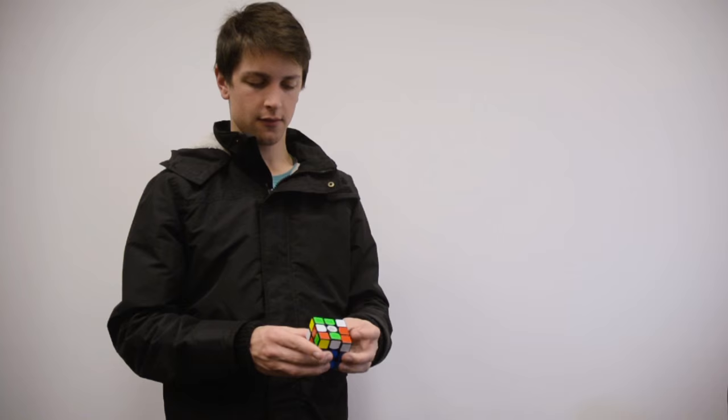No matter how mixed up a Rubik's Cube is, it is always 20 moves or less away from actually being solved. So no matter what configuration the Rubik's Cube is in, it will take either 20 moves or less to be solved.